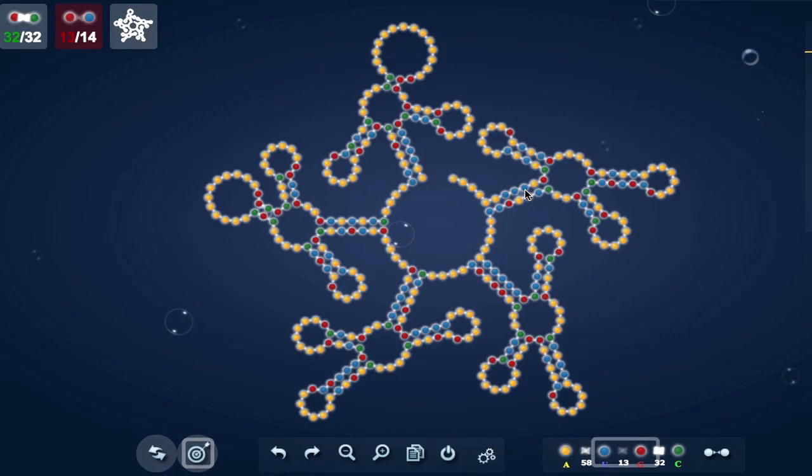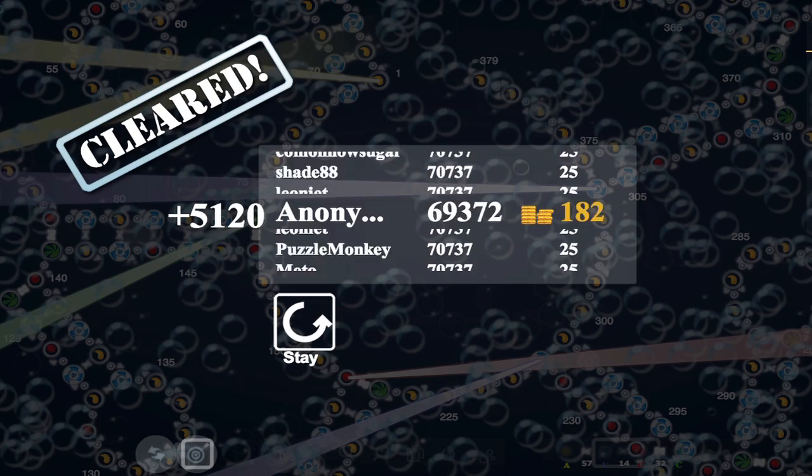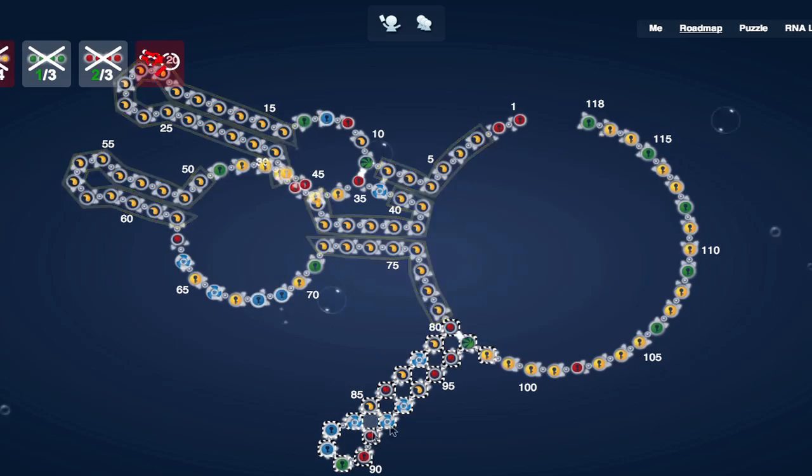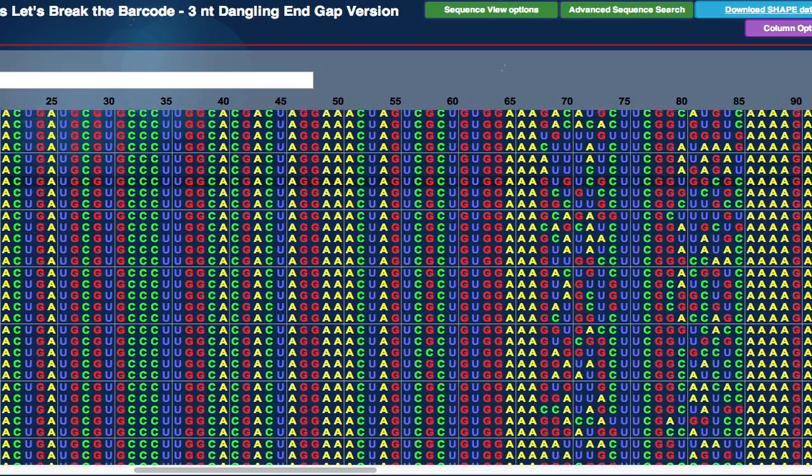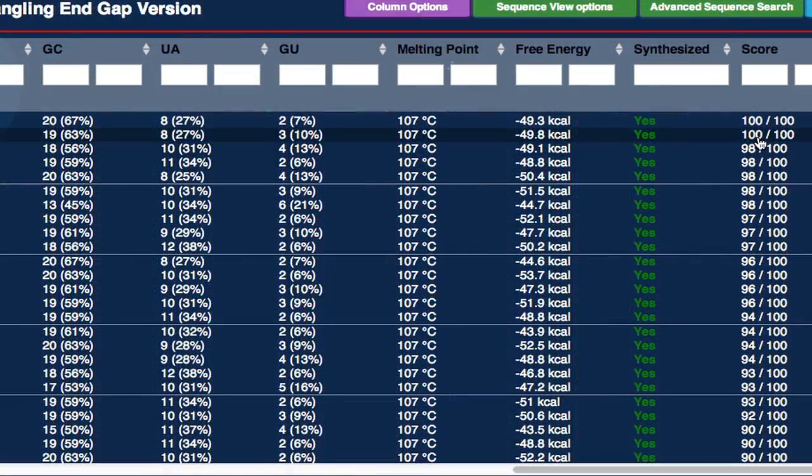If you prove yourself to be an expert player by earning 10,000 points, you can join a community of elite RNA engineers who craft real molecules designed to help solve RNA's many mysteries. Each month, thousands of these designs are synthesized and analyzed in a lab in California. If your design is chosen, you'll receive a score and data that will tell you how well your RNA performed.